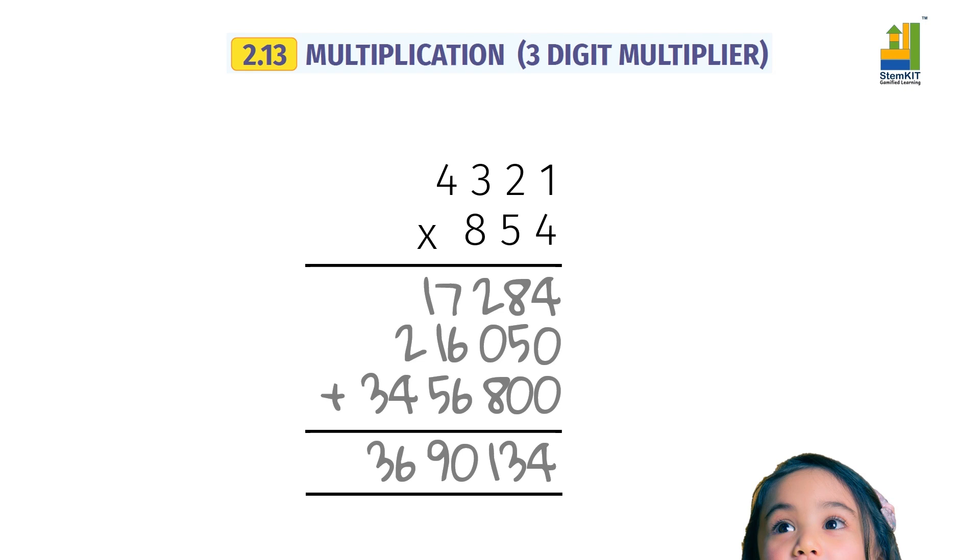There you go. That was easy. Now you can multiply with 3 digit numbers.